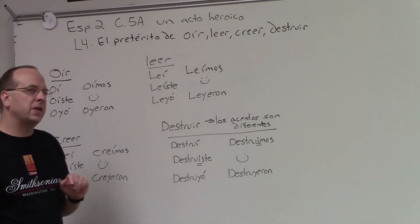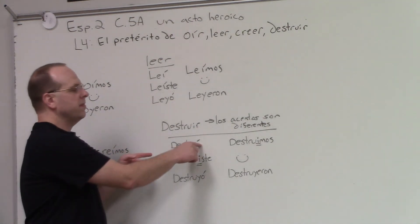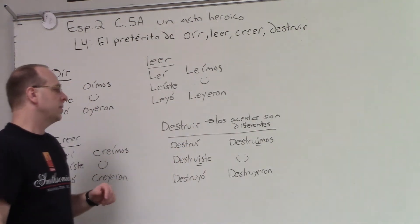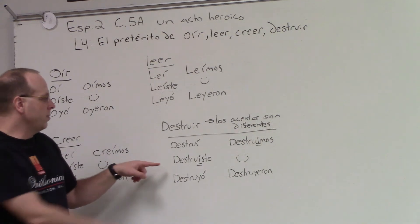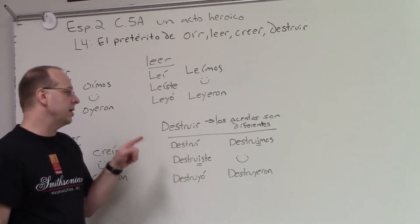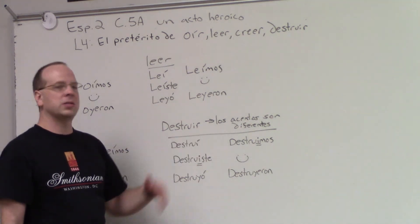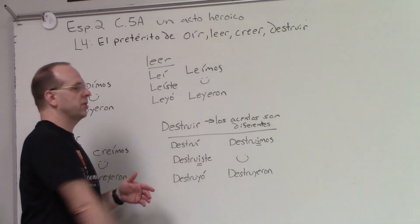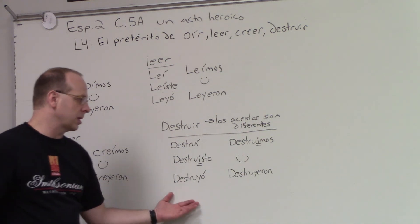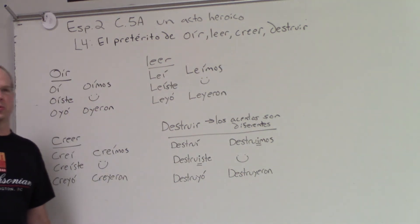Destruir es diferente. Destruir en forma de yo lleva acento sobre la I: destruí. Pero en forma de tú y en forma de nosotros no hay acento sobre la I: destruiste, destruimos. No es necesario escribir los acentos. Y también tenemos destruyó y destruyeron.